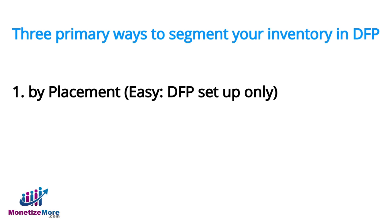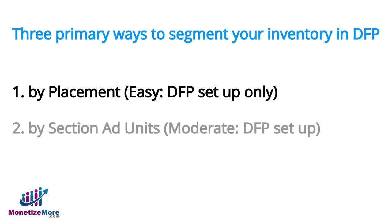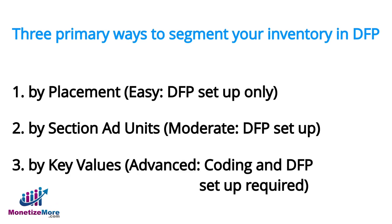There are three primary ways to segment your inventory in DFP. The first is the most basic way, which is through placements. The second way is a bit more complicated, which is by labeling your ad units by section. And the third, most advanced way to segment your inventory is through key values. Because key values are an advanced feature, they merit their own discussion and we'll cover them in a later tutorial.